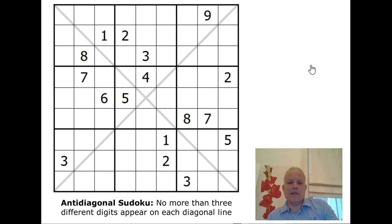This puzzle is from part two of the test and it's an anti-diagonal. Don't be fooled into thinking that because there's two diagonal lines running through this puzzle that each of those lines contains the numbers one to nine. In fact, the rules with an anti-diagonal are that each of those lines contains a maximum of three digits.